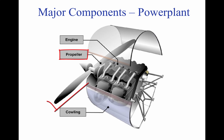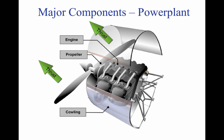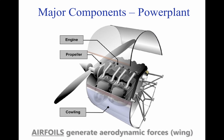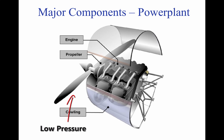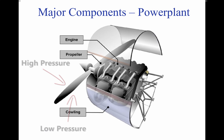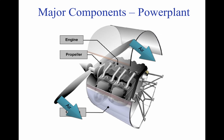The propeller mounted on the engine translates the engine's turning force into thrust. The propeller may also be mounted on the back of an aircraft and used to push the aircraft forward. A propeller is a rotating airfoil that produces thrust through aerodynamic action. A low-pressure area is formed at the back of the propeller's airfoil, and high pressure is produced at the face of the propeller, similar to the way lift is generated by an airfoil used as a lifting surface or wing. This pressure differential pulls air through the propeller, which in turn pulls the airplane forward.